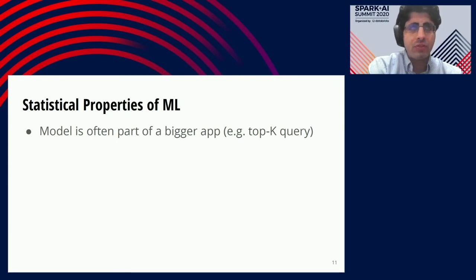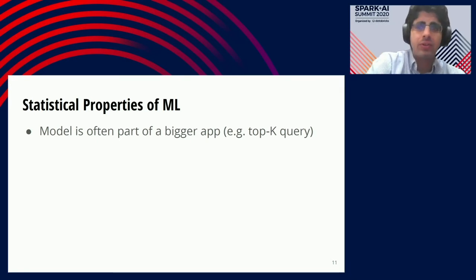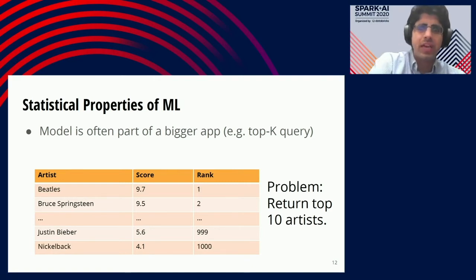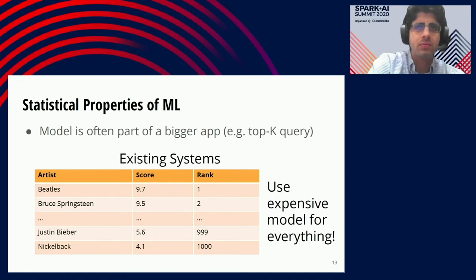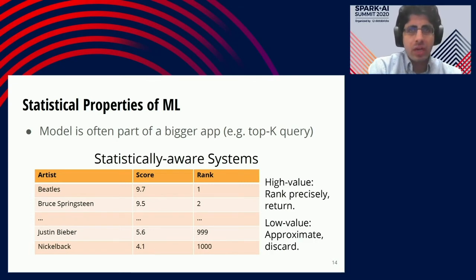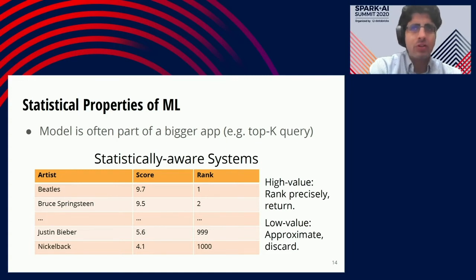Another interesting property is that many ML applications are run as part of higher-level applications, such as top-K queries. A top-K query asks us to rank and return the K highest scoring items in a dataset — for example, the 10 artists a user would like the most. Existing systems would naively predict every item with the same expensive model and then rank and return the top K. A statistically aware system could instead use a cheap model to identify and discard the majority of low-scoring items, then use a more powerful model on the minority of high-scoring items to precisely rank and return them, dramatically improving performance.